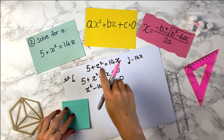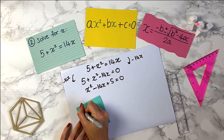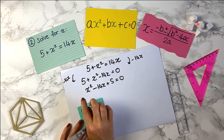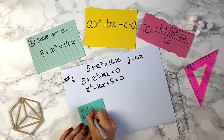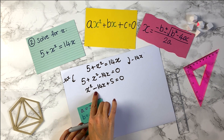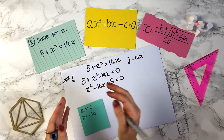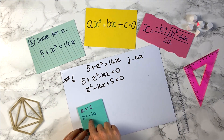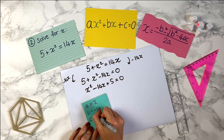Now we want to work out our a, b, and c values. Here we have again that a equals 1 — that's the number in front of x². Then b equals minus 14, so be really careful to include the minus here. You can think of this as x² plus (minus 14)x, so b is minus 14. And our c value here is 5.